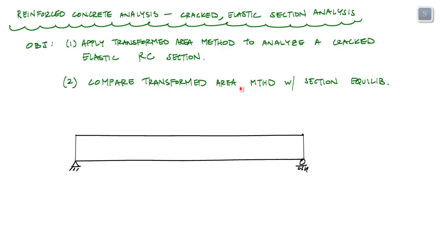Then we're going to compare the transformed area method with section equilibrium. To get started, we'll ask ourselves when does a cracked elastic section behavior occur in a reinforced concrete beam. In most cases, that is almost all the time during normal operation or service—you're just using the structure the way that it was intended. If it's a bridge, cars or trucks are driving over it; if it's an office, you're sitting at your desk working.